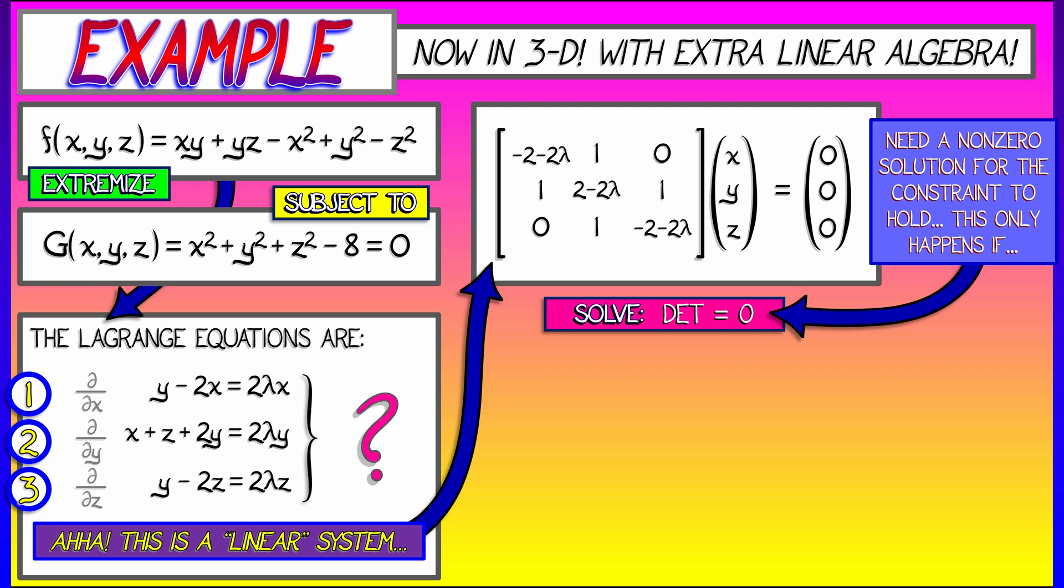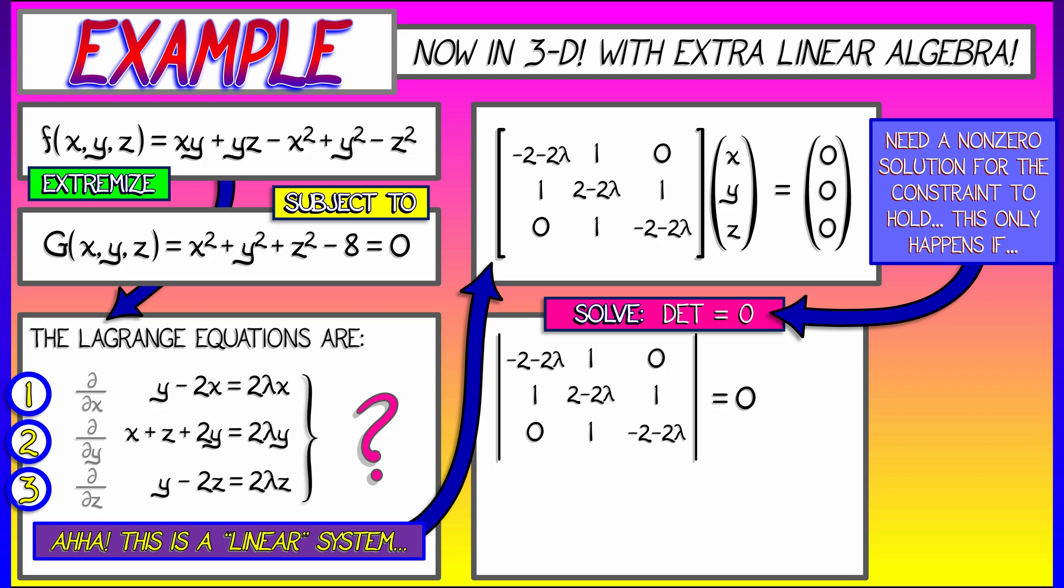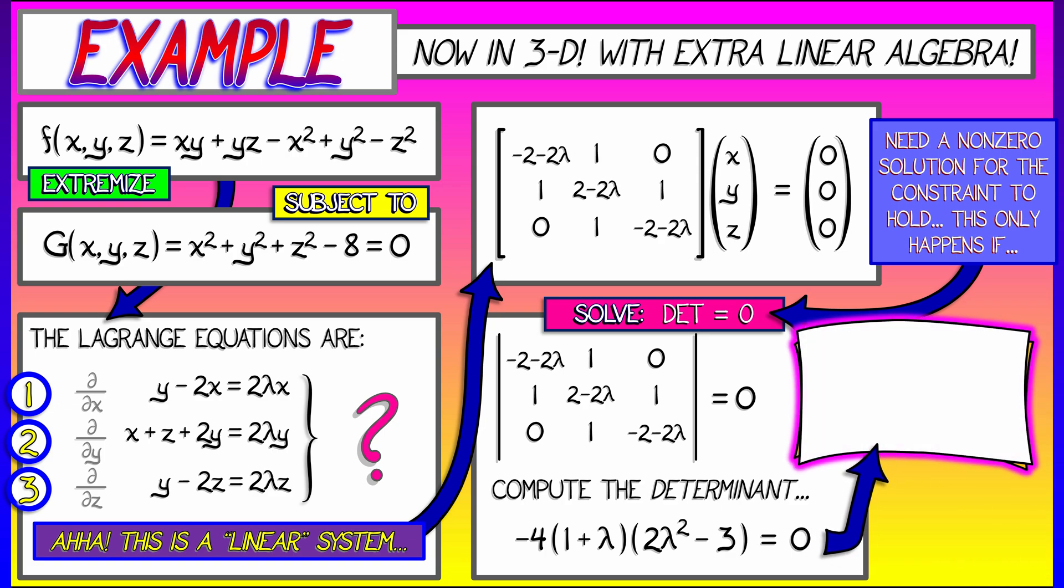So, in this case, what we need to do is take the determinant of that three-by-three matrix, set it equal to zero, then solve for the appropriate value of lambda. And take a moment, go back, remember how to do that kind of stuff. I'm going to do the hard work for you, and factor that equation into -4 times quantity (1 + λ) times quantity (2λ² - 3). Set that equal to zero. That means that either λ = -1, or 2λ² = 3. That is, λ = ±√(3/2).